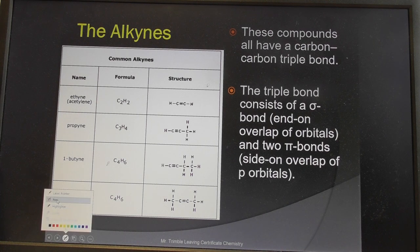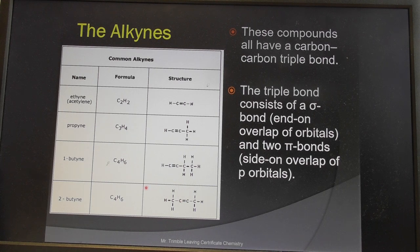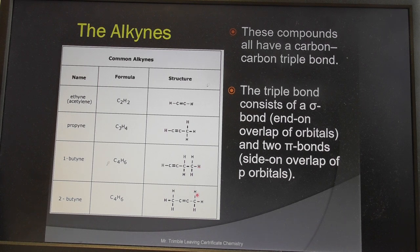The naming system for alkynes: 'eth-' is two carbons, 'prop-' is three, 'but-' is four. Remember the triple bond can be on different carbons — we always number based on where the triple bond starts and keep the number as low as possible, meaning as close as possible to the nearest end of the molecule. If the triple bond were at the other end it would be the same molecule just flipped around.